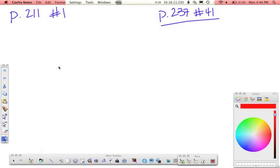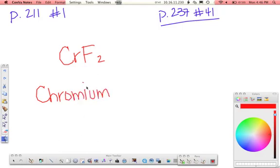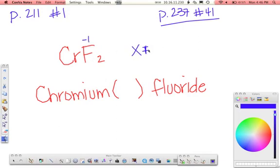Last one. CrF2. Cr is not one we worked with a lot. So look on your periodic table. Cr stands for chromium. Chromium is a D block, so it does need a Roman numeral. F is fluorine, so fluorine becomes fluoride. And to figure out the charge on chromium, look at fluorine. Fluorine is in group 17, so it's a negative 1. So chromium is our X. X plus 2 times negative 1. We have two fluorines at negative 1 charge each. And that whole thing's got to be equal to 0. So chromium becomes chromium 2 fluoride.